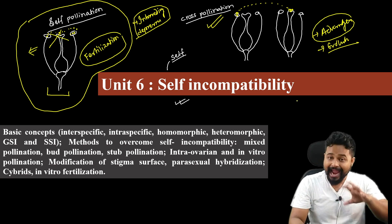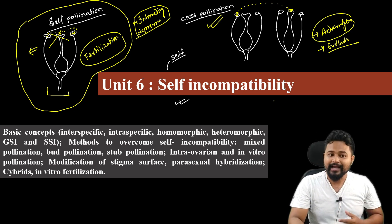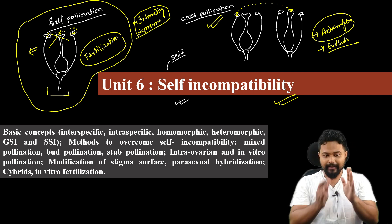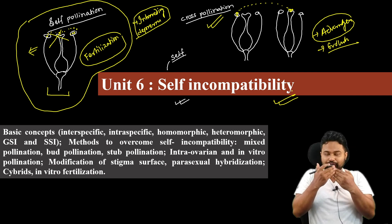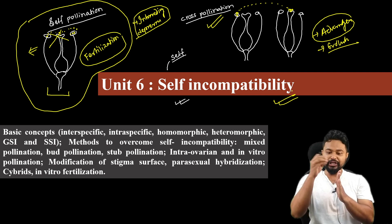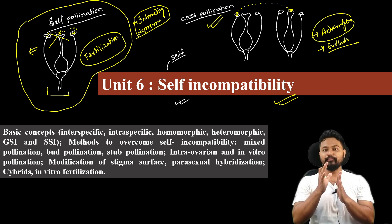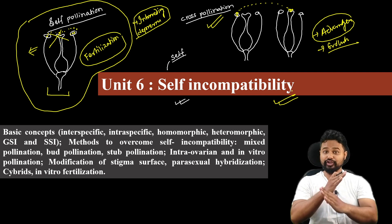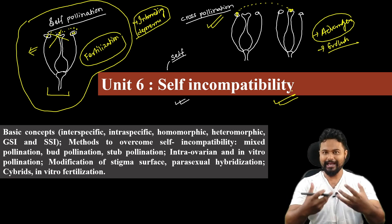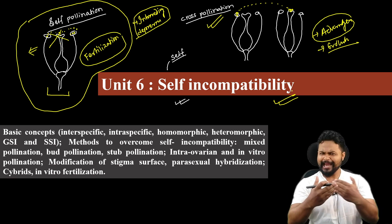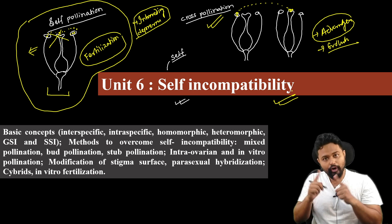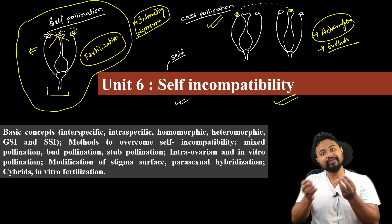So the idea of self-incompatibility is that it is an adaptive feature. The nature of the plants — the nature has evolved in plants — where self-incompatibility acts as a mechanism to focus on how plants survive and reproduce in the best way.